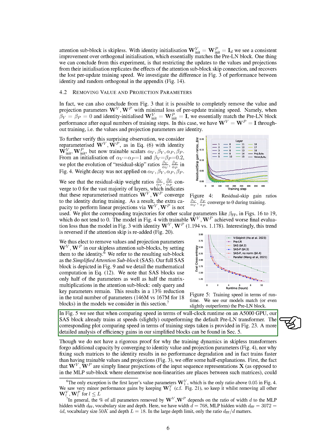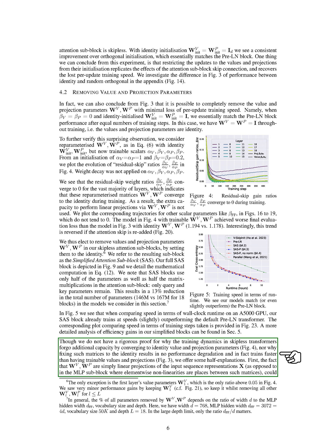This results in a 13% reduction in the total number of parameters in the models we consider. In terms of training speed on an A5000 GPU, our SAS block already slightly outperforms the default pre-LN transformer. While we don't have a rigorous proof for why the training dynamics in skipless transformers converge to identity value and projection parameters, or why fixing such matrices to the identity results in no performance degradation and in fact trains faster, we offer some partial explanations.